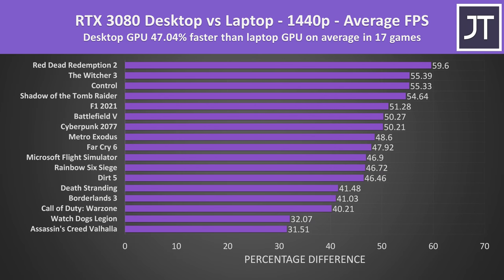Stepping up to the higher 1440p resolution, the performance difference is slightly bigger on average, with the desktop 3080 now reaching 47% higher average frame rate. Again in the best case we're looking at close to a 60% improvement with the desktop, while worst case there's at least a 31% boost.